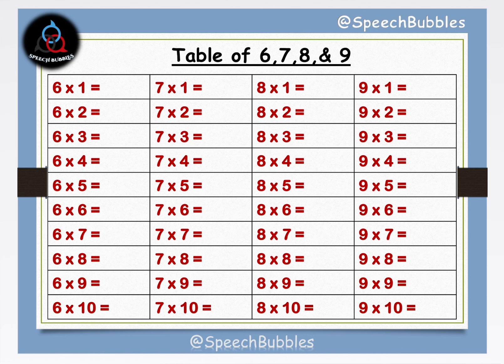First of all we will see the table of 6. 6 1s are 6, 6 2s are 12, 6 3s are 18, 6 4s are 24, 6 5s are 30.